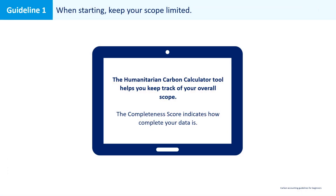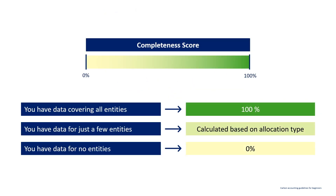Another way the tool can help with this first guideline is through the completeness score. The completeness score indicates how complete your carbon accounting data is — ranging between 0% and 100%. 0% means you're not entering carbon accounting data for any of the entities listed in the tool. 100% means you're providing data for all entities. The completeness score is automatically calculated at different levels: for the entire carbon report, for each emissions category separately, and for each emissions subcategory separately.